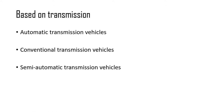Based on transmission, we can classify all automobiles into three parts: automatic transmission vehicles, conventional transmission vehicles, and semi-automatic transmission vehicles. Automatic transmission vehicles are those capable of changing gears by themselves. Conventional transmission vehicles need gear changes done manually. Semi-automatic is a combination of both.